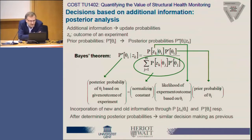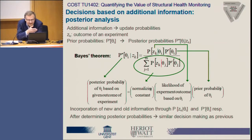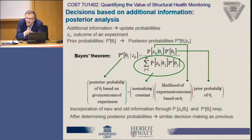The next type of analysis is posterior analysis. The difference between posterior analysis and prior analysis — presented by Chris — is that in this case the decision maker gets new information from an experiment or inspection, but the decision about whether to carry out this inspection is outside the decision process. So the decision maker receives the information but is not involved in the decision about the experiment.